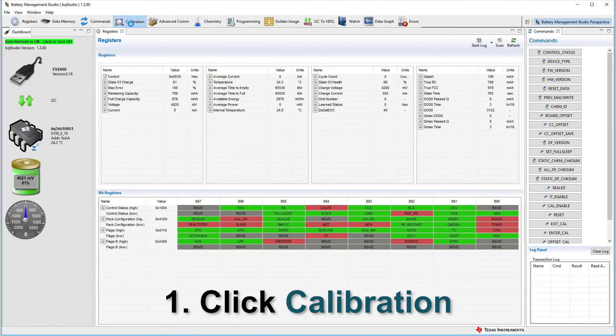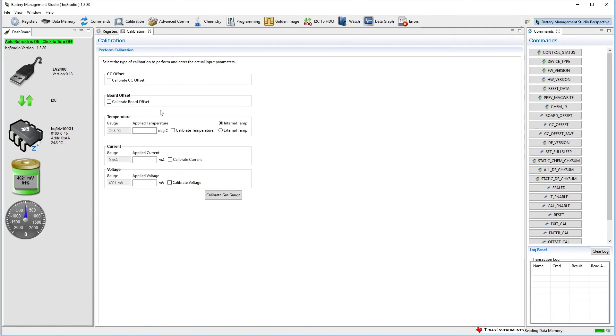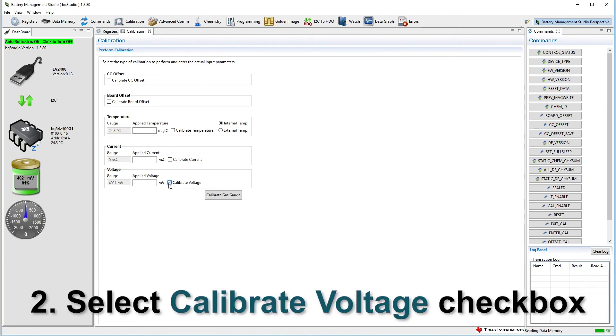In the ribbon, click on calibration to open the calibration window. In the calibration window, ensure that all checkboxes are deselected. Select the calibrate voltage checkbox.